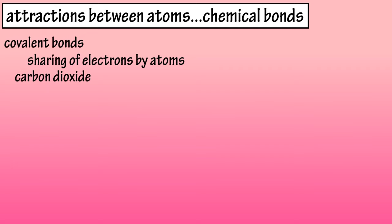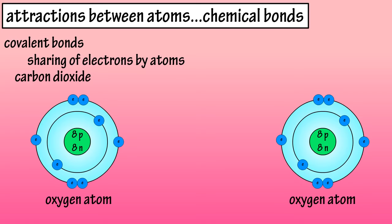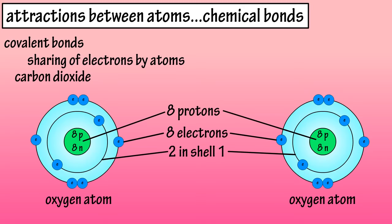Let's look at carbon dioxide, or CO2, which forms a covalent bond. Oxygen has an atomic mass of 8. So, 8 protons and 8 electrons. 2 electrons in its inner shell, and 6 in its outer shell.